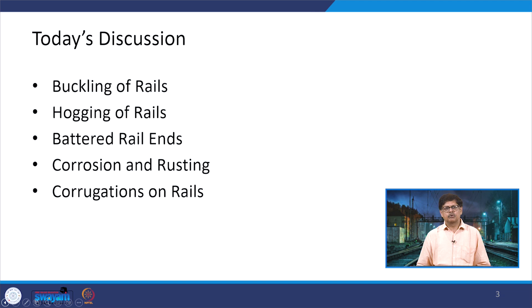In today's discussion, we have these five aspects related to the rails: buckling, hogging, battering, corrosion and corrugations. We will look at all of these one by one, understand why they happen, and what remedial measures can bring the track back to good condition so there is no issue in terms of defects, distresses, or any condition which may make movement of trains on those rails difficult or hazardous.